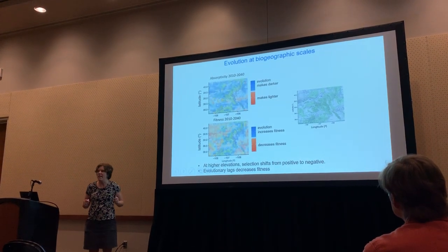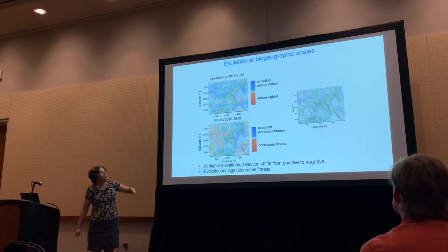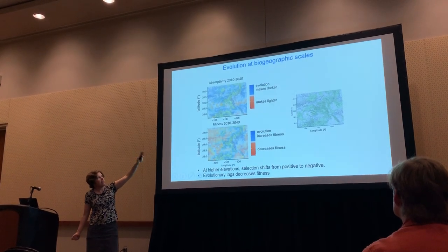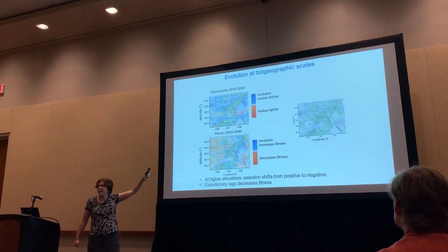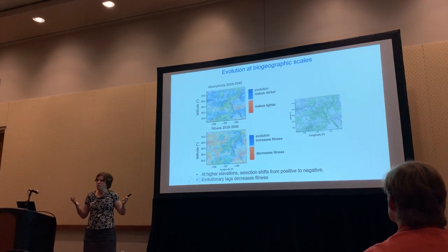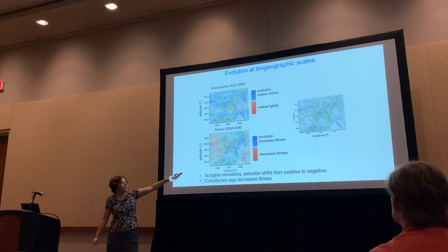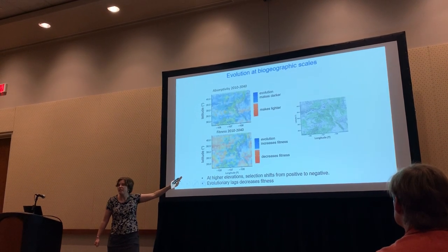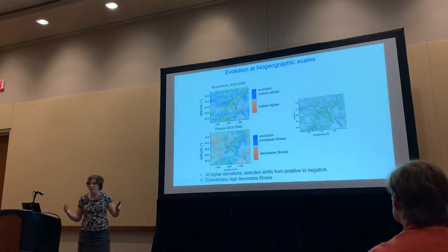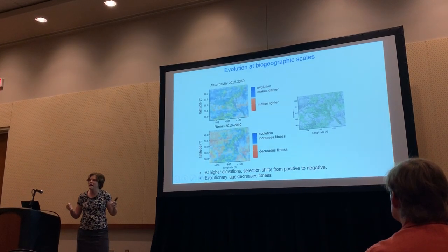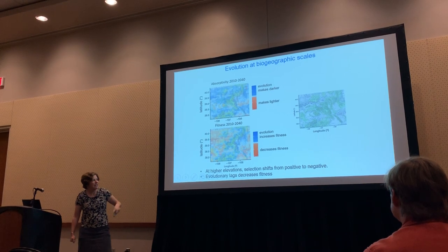Looking at the role of evolution: a map of absorptivity between 2010 and 2040 shows areas in blue where evolution is making wings darker and areas in red where evolution is making wings lighter. Contrary to what we'd predict at the outset, we see a lot of blue — consistent with initial evolution toward darker wings to extend flight time, but ultimately a risk of overheating with more warming. Areas in red in the bottom panel show where evolution decreases fitness compared to a scenario without evolution. To our surprise, our model predicts a new twist: evolutionary lags following from the shift in the direction of selection may ultimately decrease fitness.